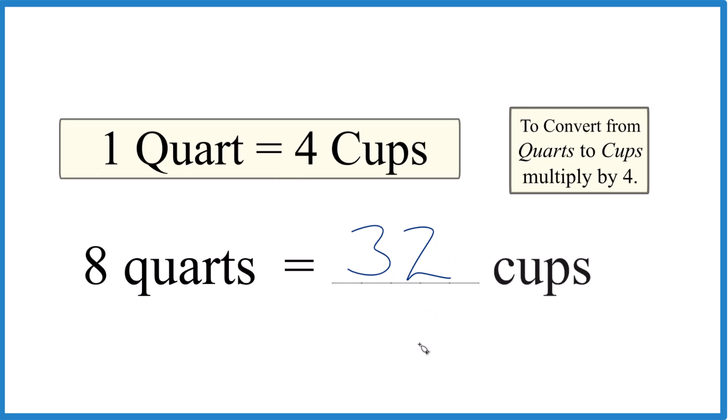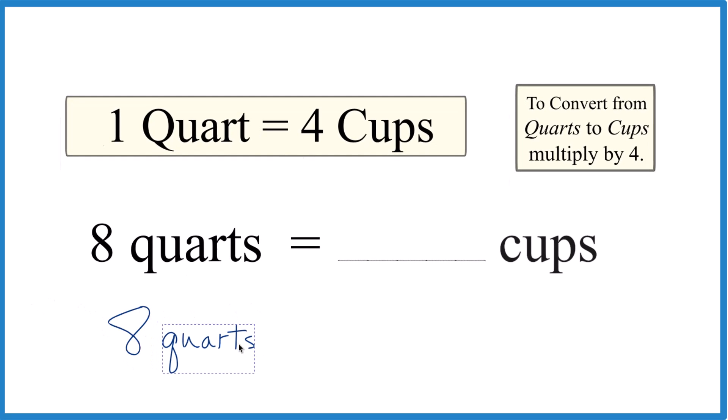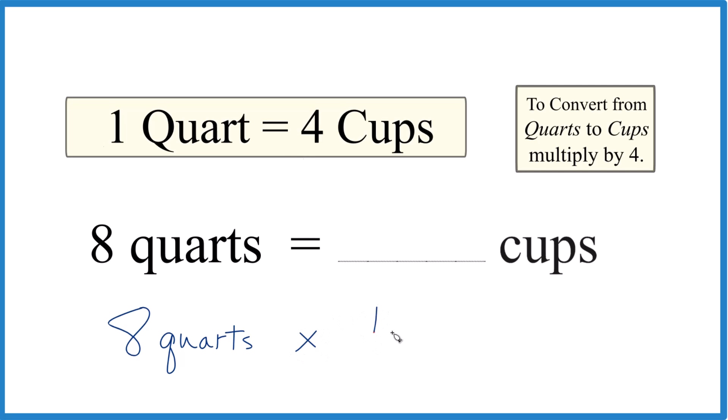There is another way we could do this though. We could say eight quarts, that's how many we have, and then we're just going to multiply that times four. Because when we have our quarts and we're going to cups, we just multiply by four.